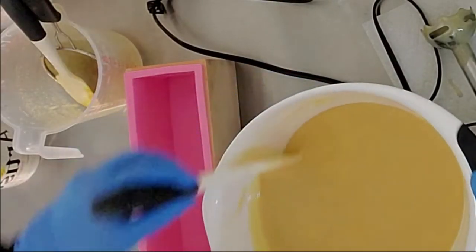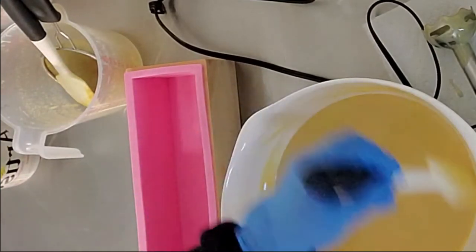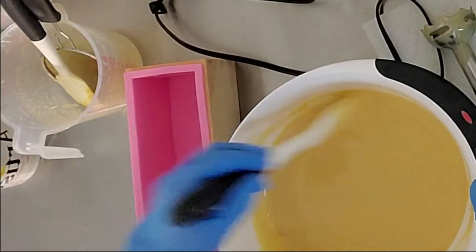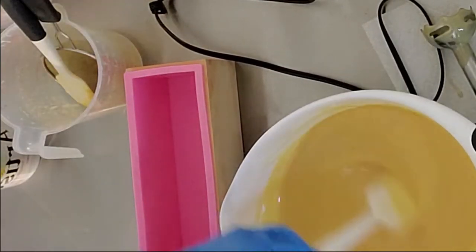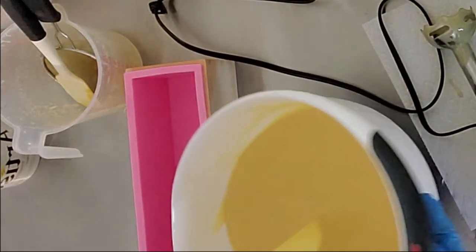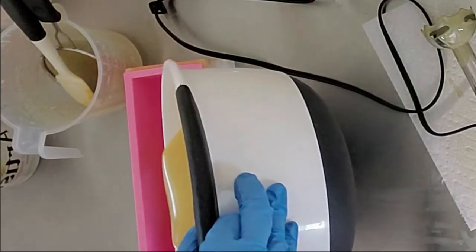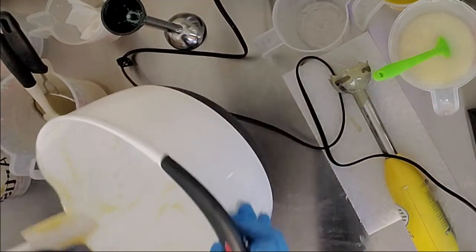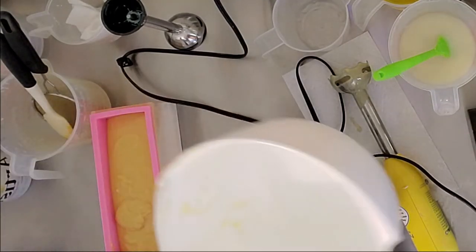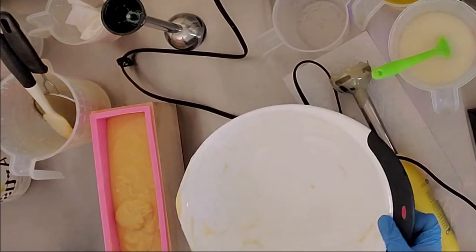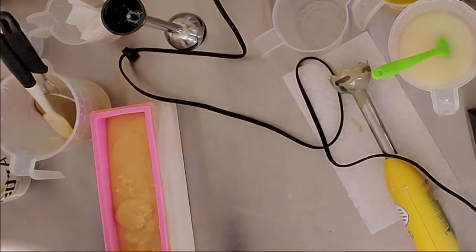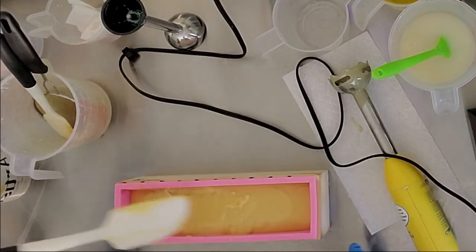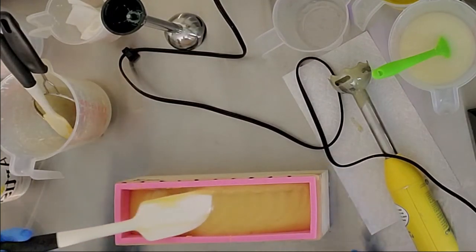Here we are getting ready to pour it into the mold. These are the popular Amazon molds that I got. I got several of them in different colors: purple, pink, and blue. They're pretty cheap and they make 10 bars if you cut it just right. Make sure you scrape all of the soap off for easy cleaning of the container that you're using.